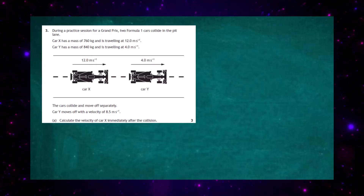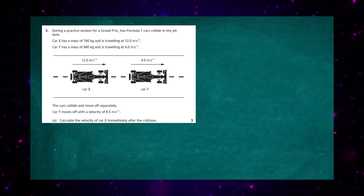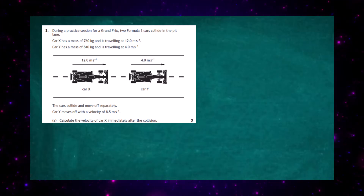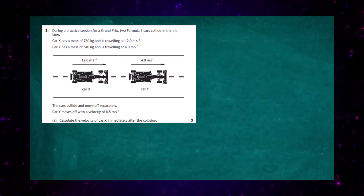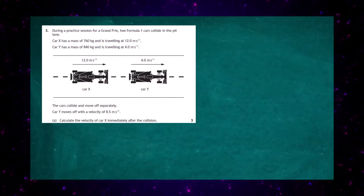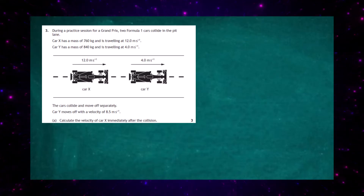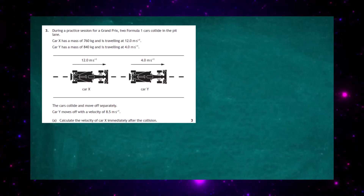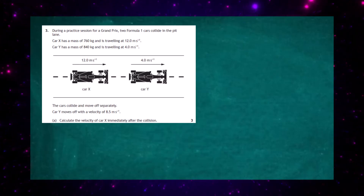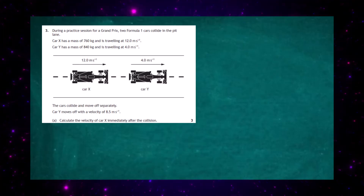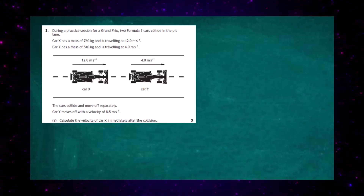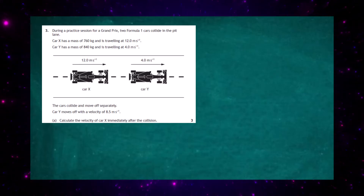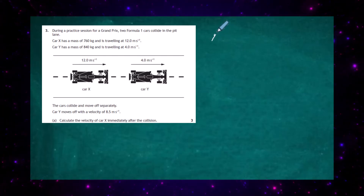Question 3 from the 2023 Higher Physical exam from the SQA, Section 2. During a practice session for a Grand Prix, two Formula One cars collide in the pit lane. Car X has a mass of 760 kilograms traveling at 12 meters per second. Car Y has a mass of 840 kilograms traveling at 4 meters per second. The cars collide and move off separately; car Y moves off with a velocity of 8.5 meters per second. Calculate, for three marks, the velocity of car X immediately after the collision. This is a conservation of momentum problem.